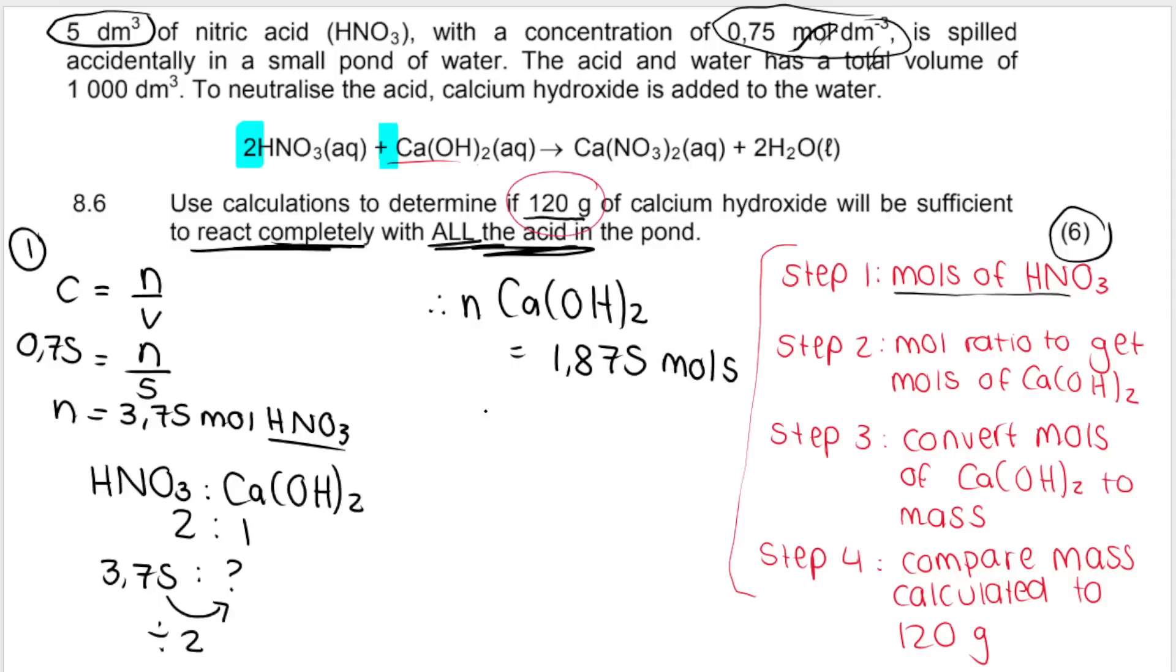Don't round off yet. You're not at the end of the question. Now just keep in mind what this means. 3.75 moles is the total moles of acid in the pond. If we want to react all of this, if we want to use all of this up, we need 1.875 moles of calcium hydroxide. How much mass is that? So we convert that back to mass. So moles of Ca(OH)2. We use baby M over big M.